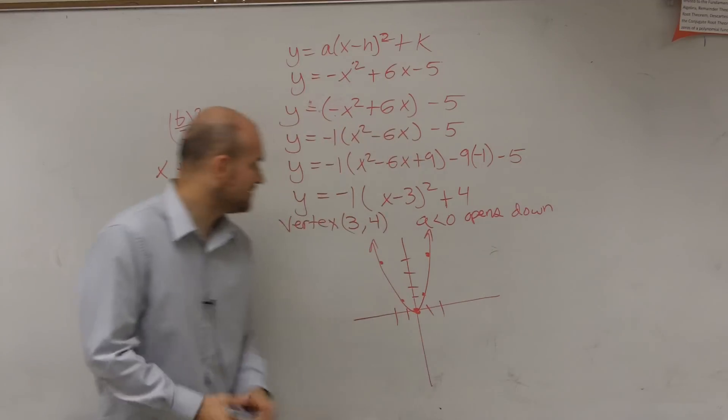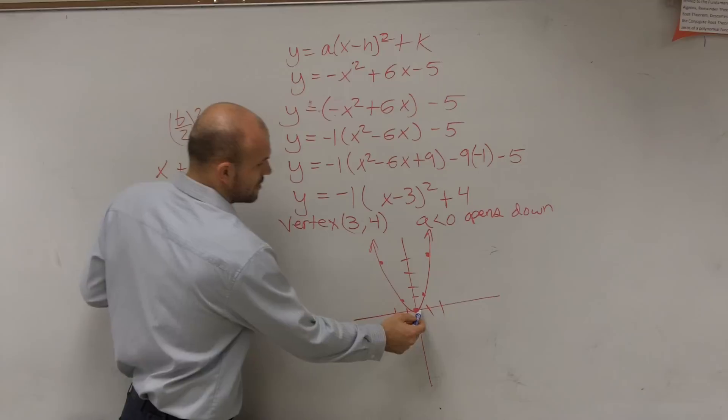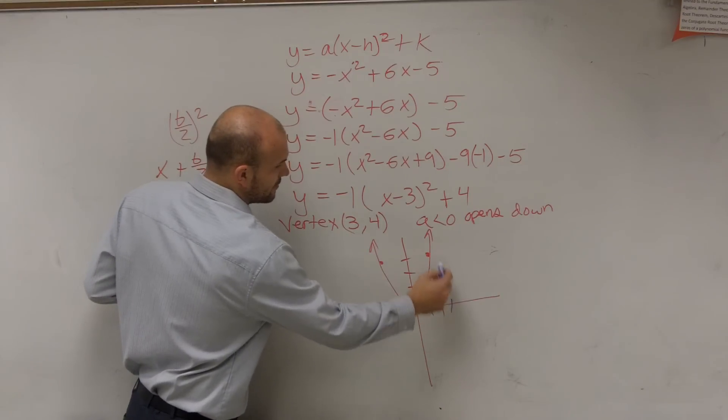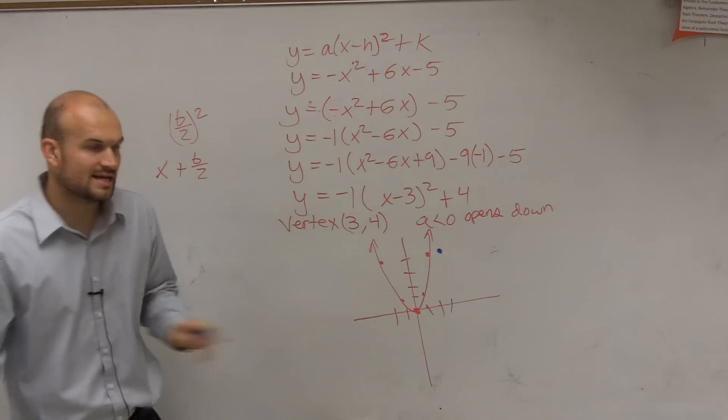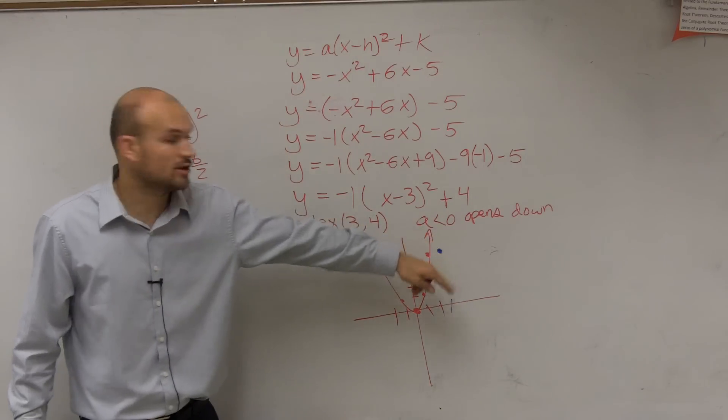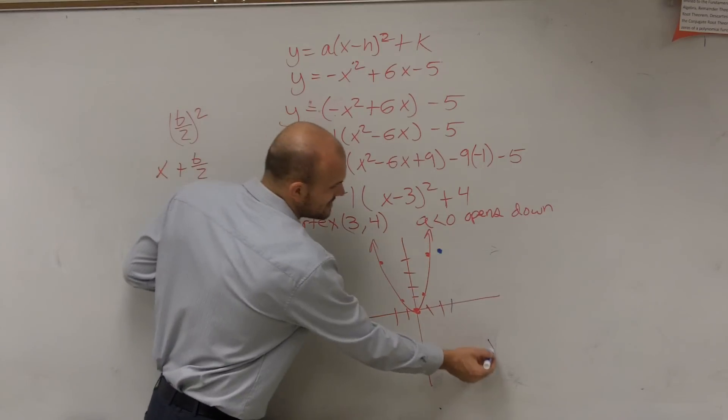Now, what you guys can see is I have a transformation. I have a new vertex, right? My vertex is now at 1, 2, 3, 4. That's my new vertex. Now I know that the graph opens down, right? So the graph is going to open down.